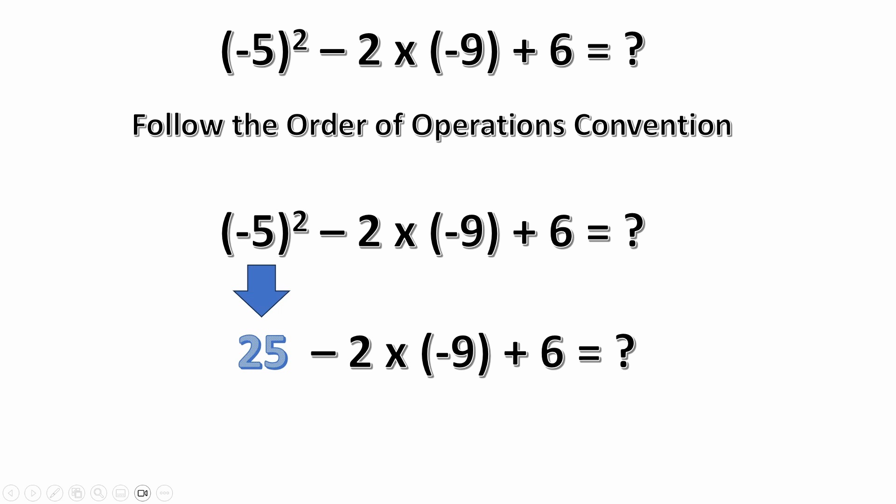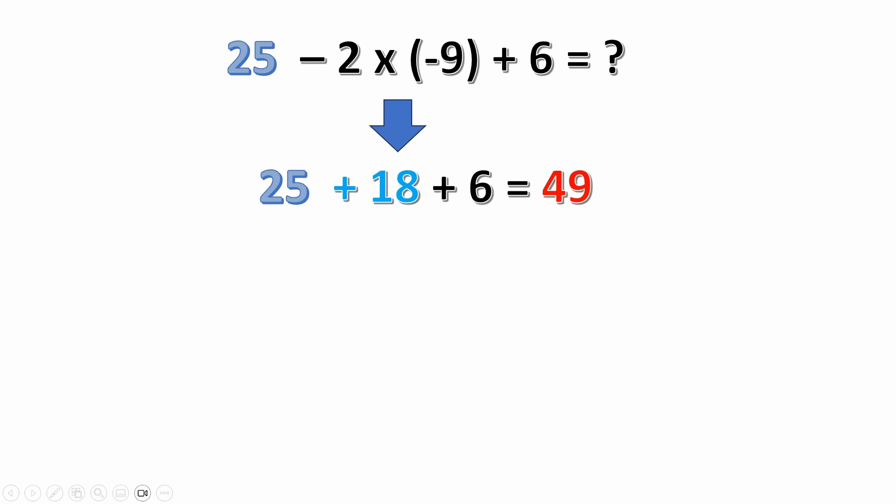So if we continue on, we've got 2 times minus 9. 2 times minus 9 is minus 18. But then we're saying 25 minus minus 18.